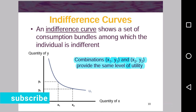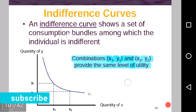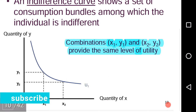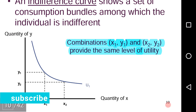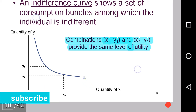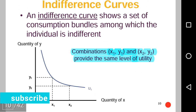What is an indifference curve? An indifference curve shows a set of consumption bundles among which the individual is indifferent. For example, in this figure, the combinations x1, y1 and x2, y2 provide the same level of utility. Since the utility level is the same on both combinations, the consumer will be indifferent between both these combinations. So, an indifference curve shows similar utility level for two combinations.